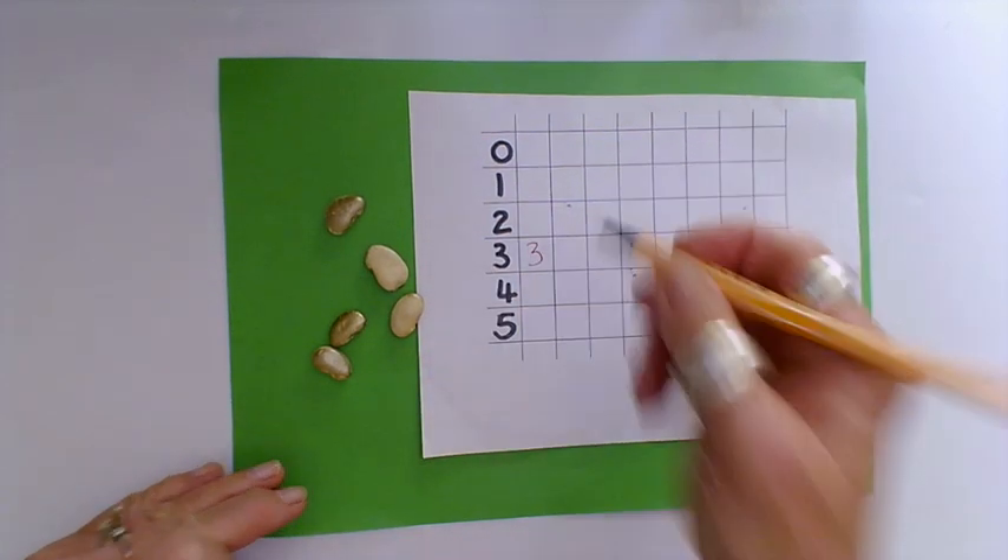You shake your beans, you spill them and you see how many land gold up. One, two, three on this occasion. So I write a three.